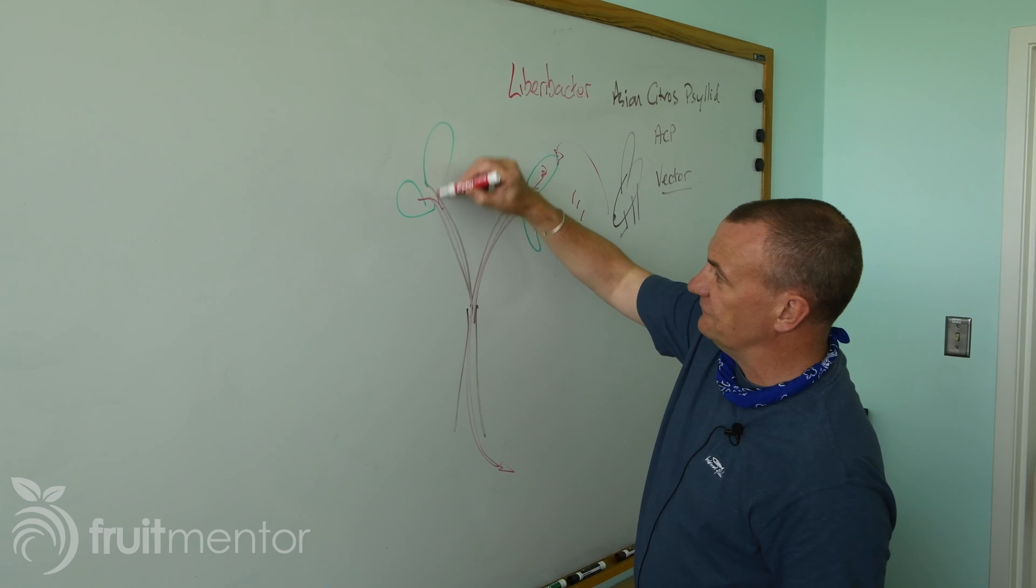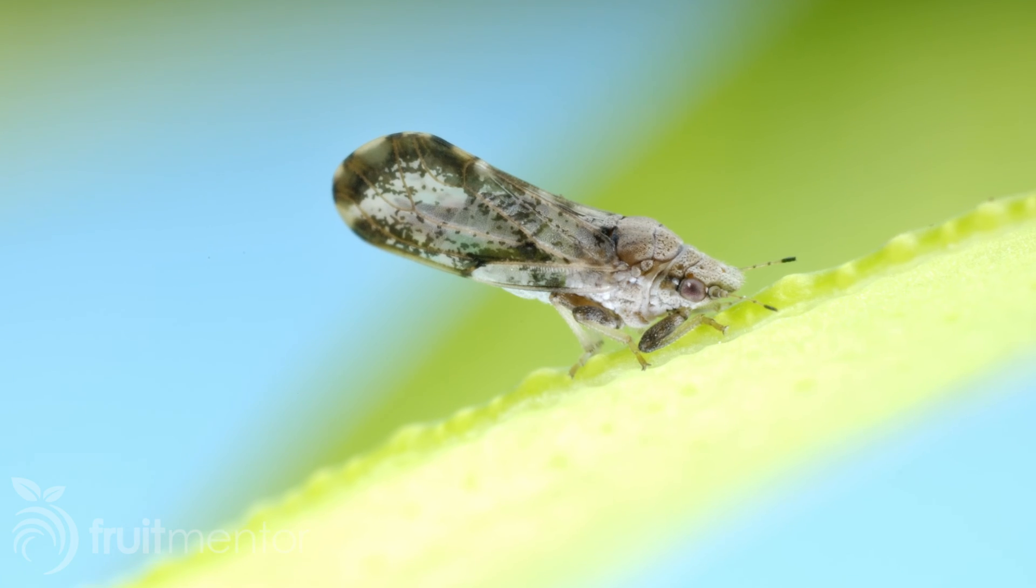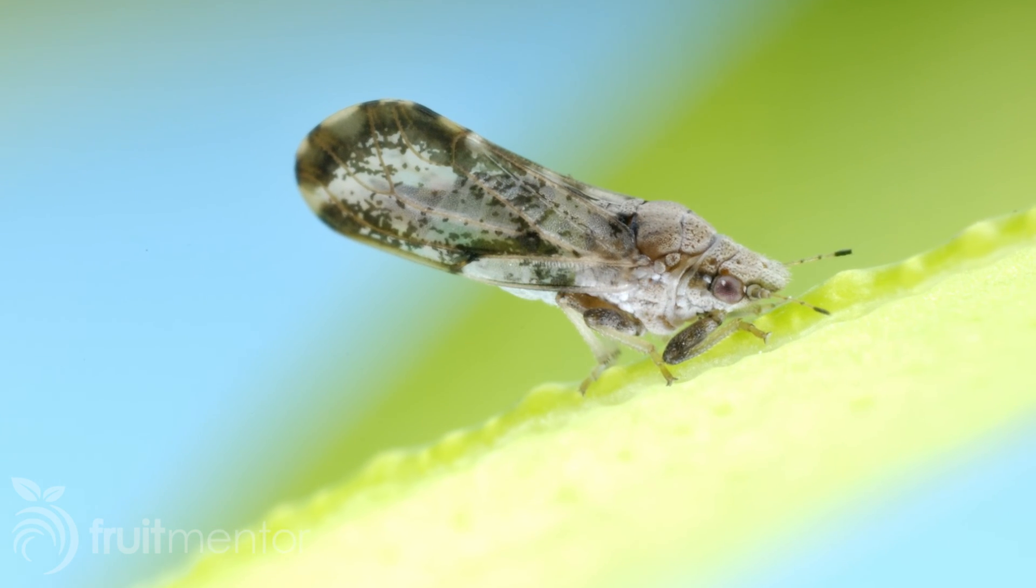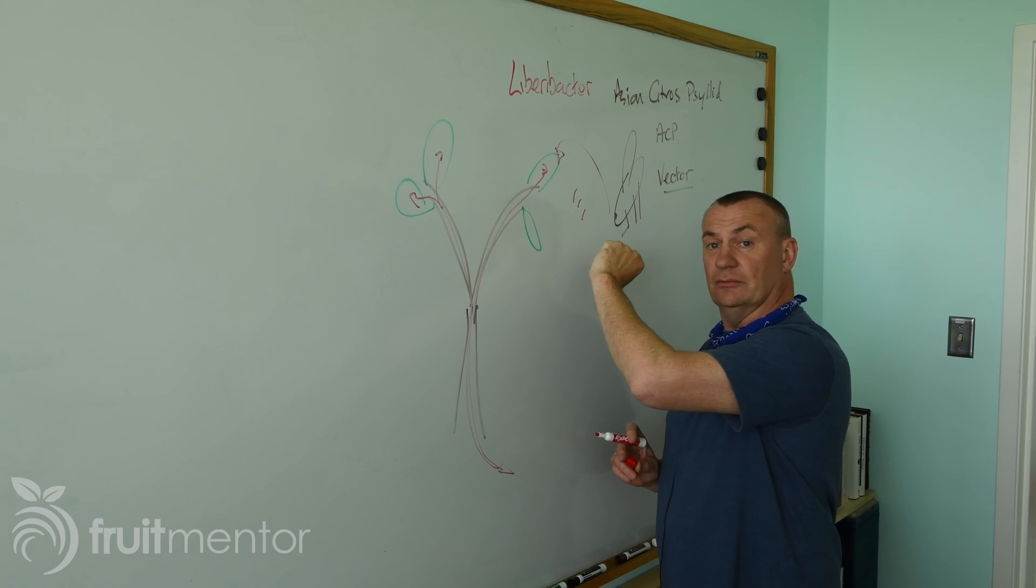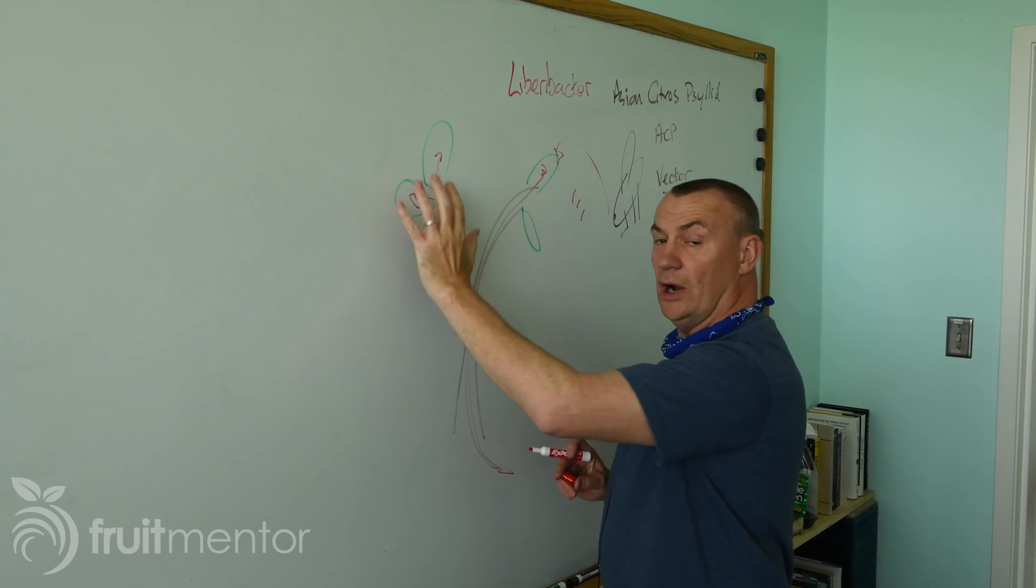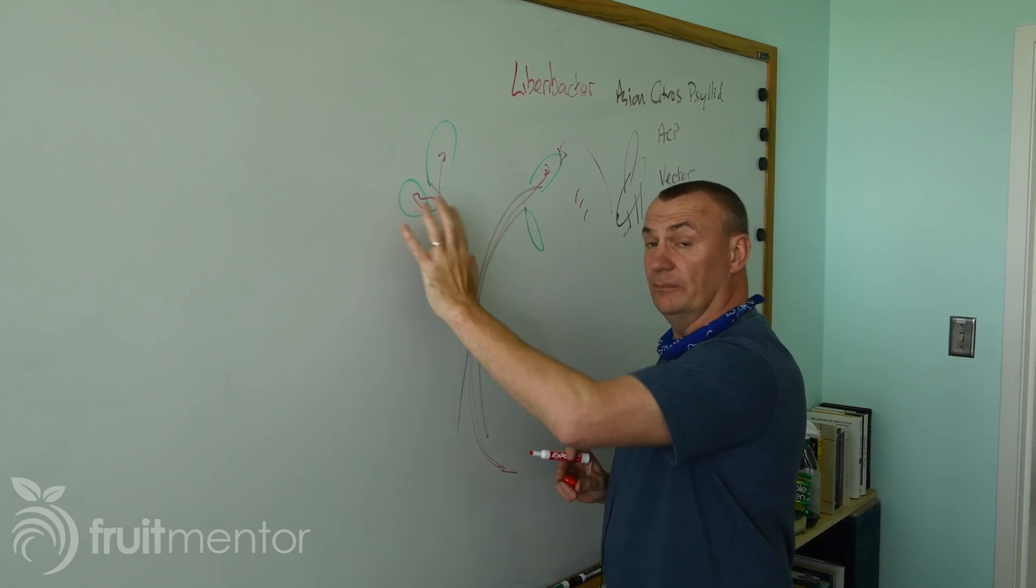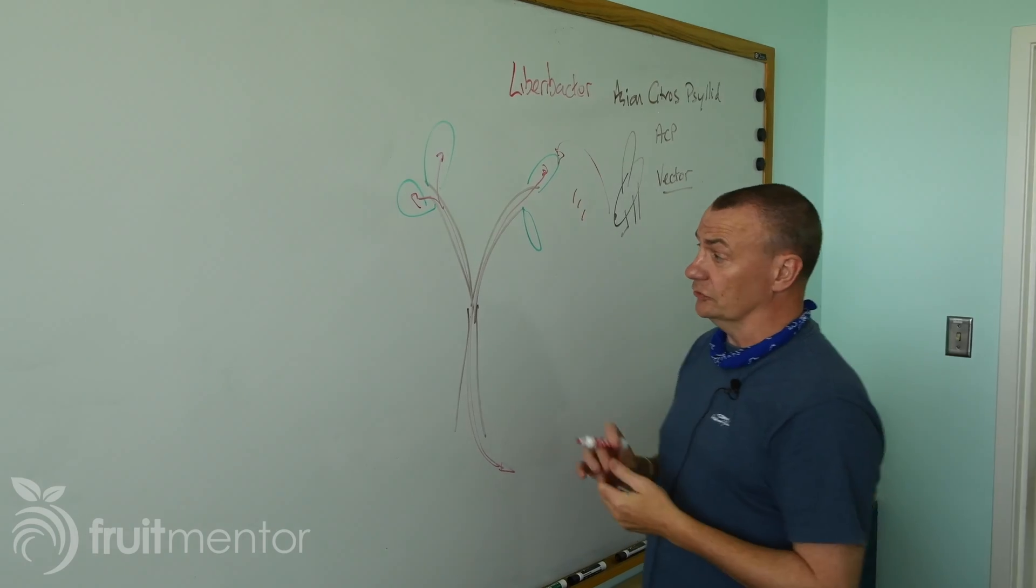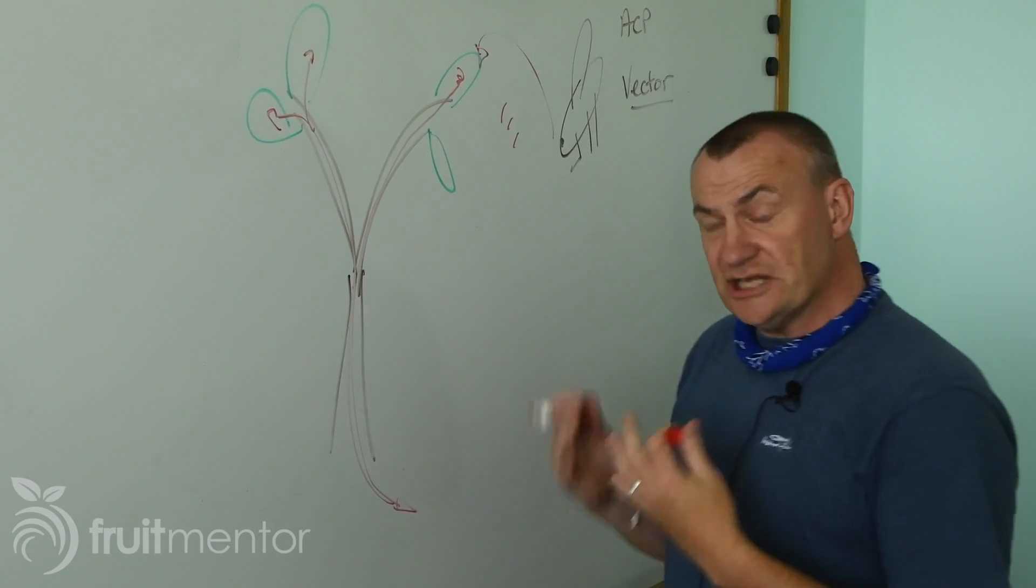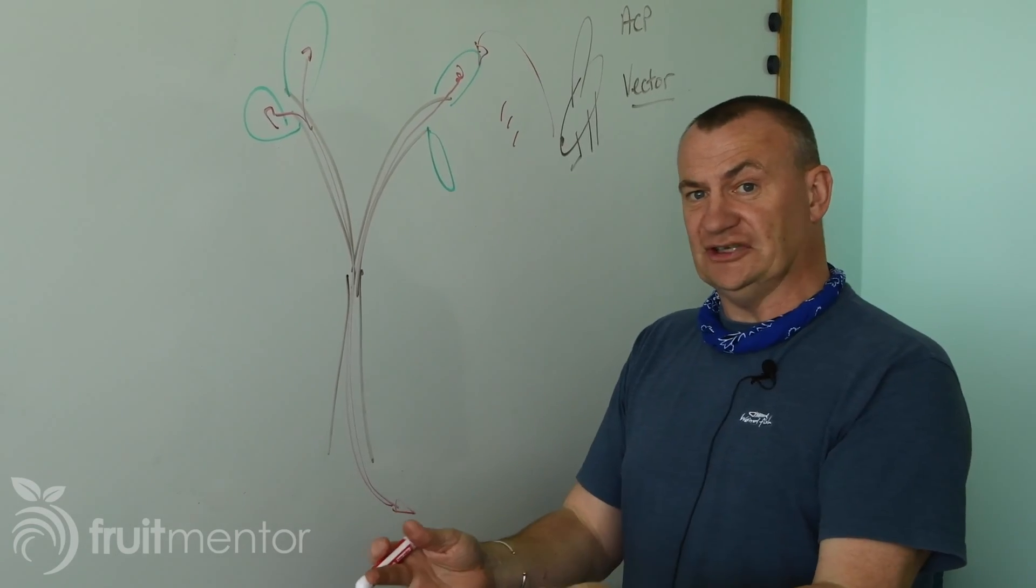And now when more psyllids come to feed, as well as bringing their own doses of the bacterium with them, now they can also acquire, pick up the bacterium from the tree. So eventually after a few months, perhaps a year or so, once the tree is infected, the trees start to contribute to the disease as well.